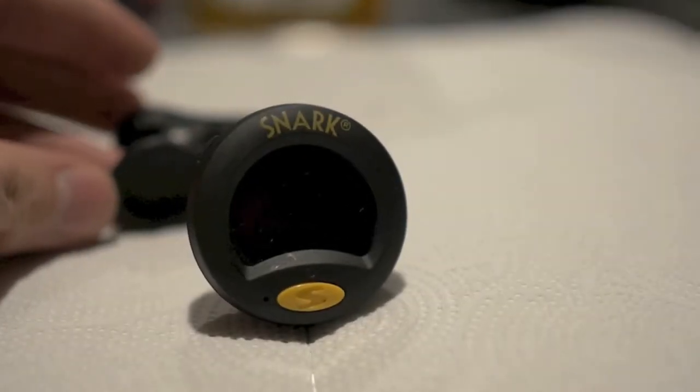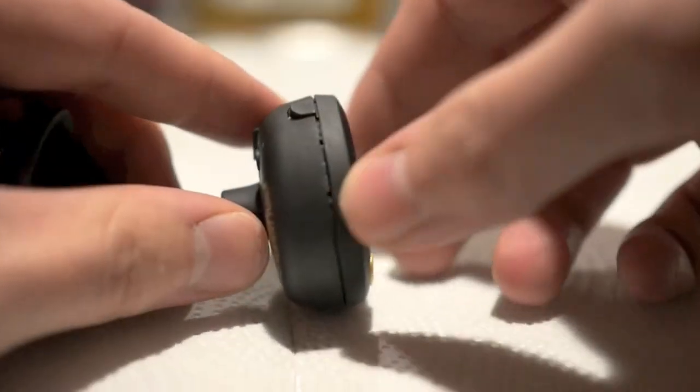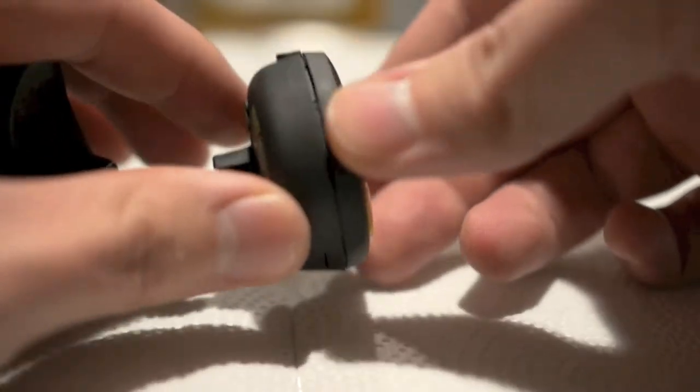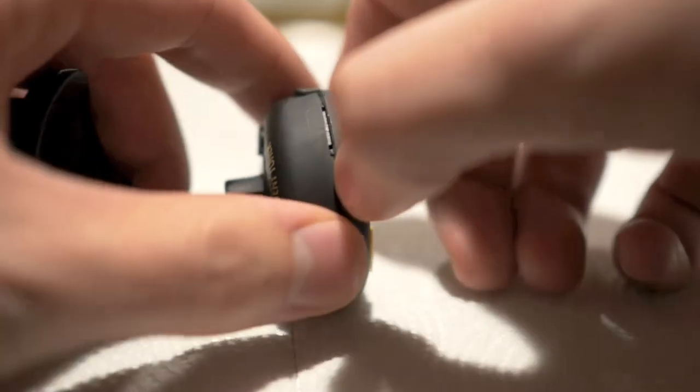So without any further ado, let's go ahead and take this apart. You can see that this one's already been taken apart, but what you're first going to want to do here is get your nail in this area and start to separate the tuner from the body.